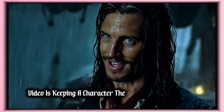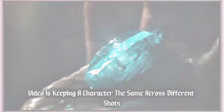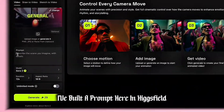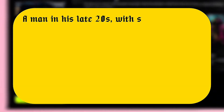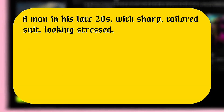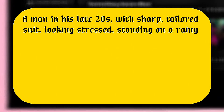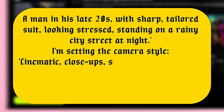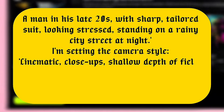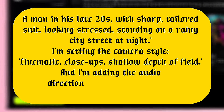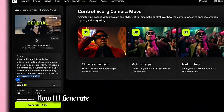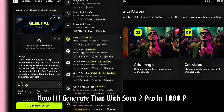First up: consistency. One of the biggest challenges in AI video is keeping a character the same across different shots. I've built a prompt in Higgs Field — a man in his late 20s with a sharp tailored suit, looking stressed, standing on a rainy city street at night. Camera style: cinematic close-ups, shallow depth of field. Audio direction: sound of heavy rain and distant city traffic. Now I'll generate that with Sora 2 Pro in 1080p.